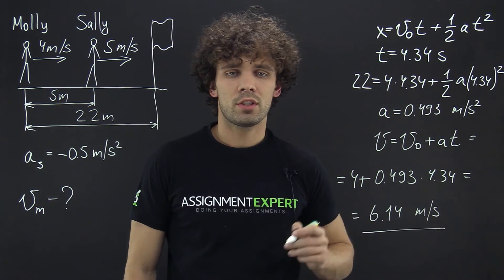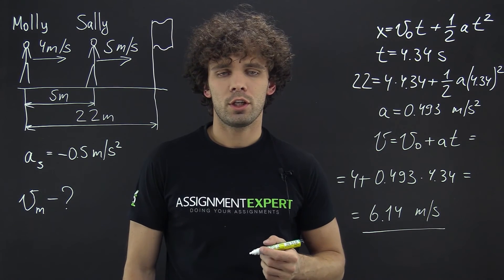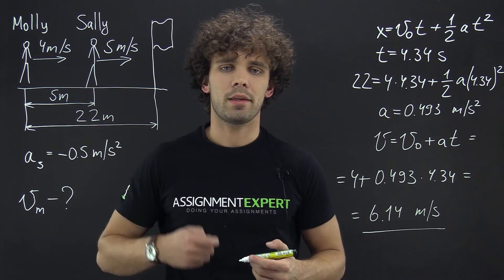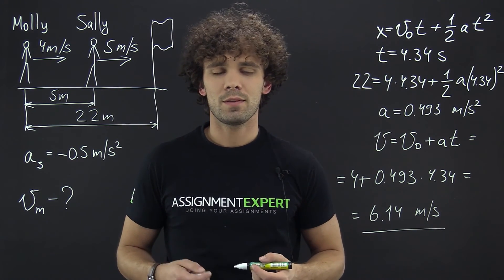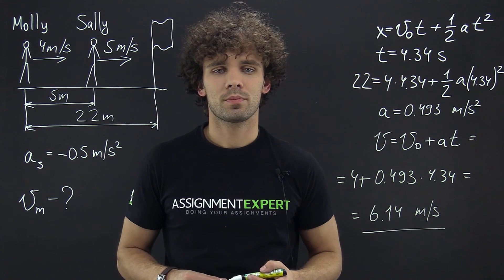So 6.14 meters per second is the final speed of Molly when she finishes at the same time as Sally. Thanks for watching, and I'll see you next time. Goodbye.